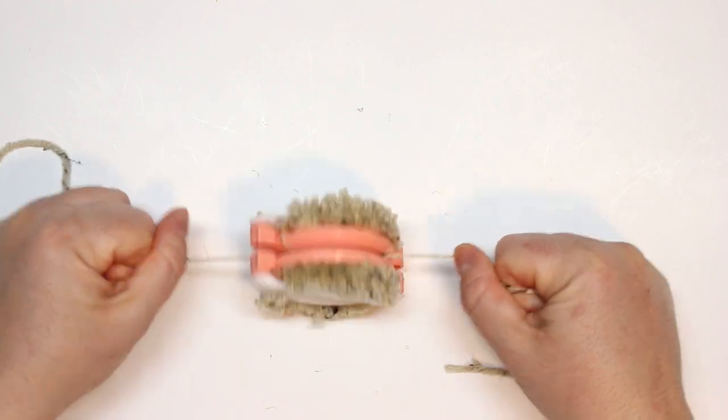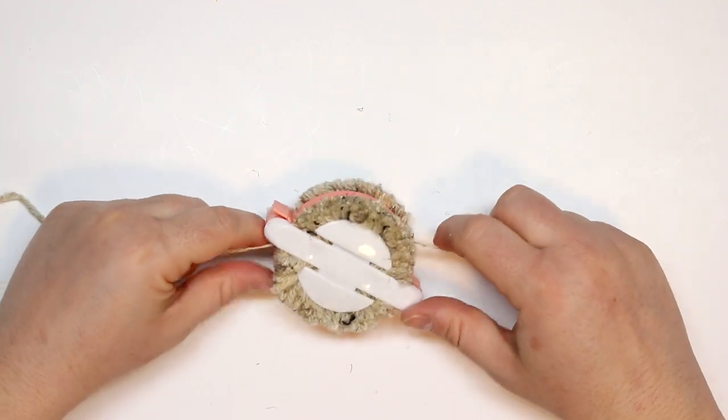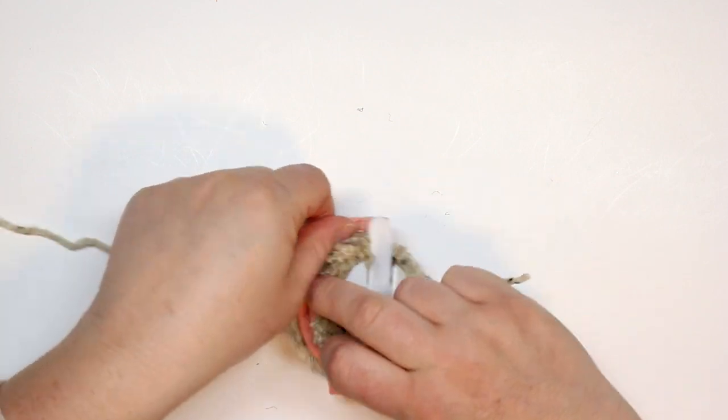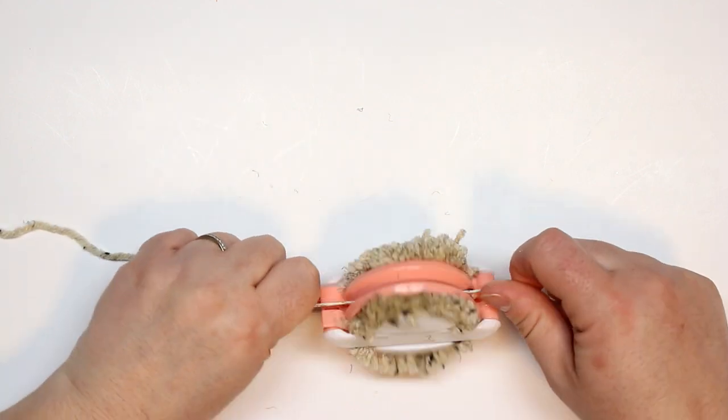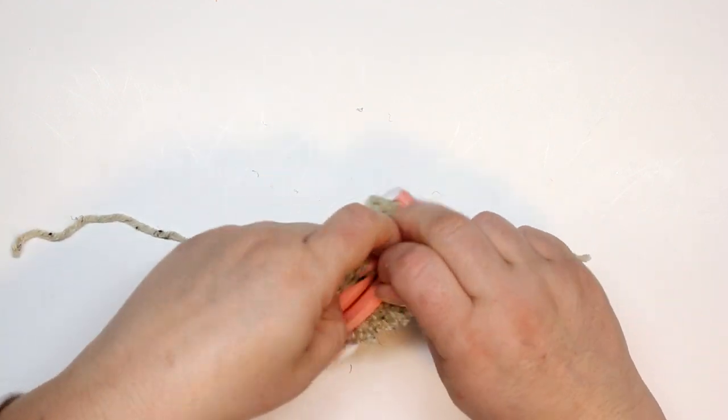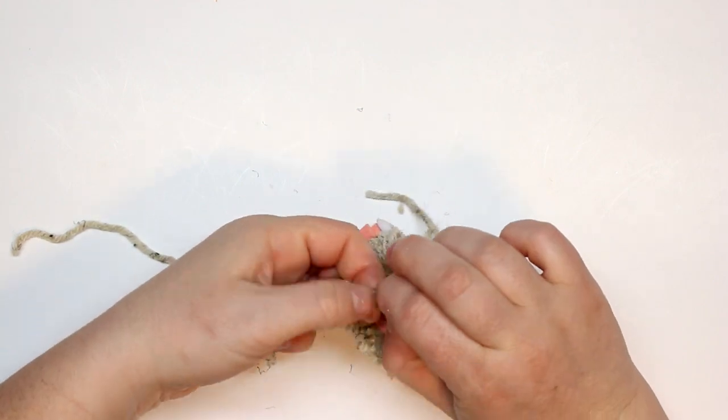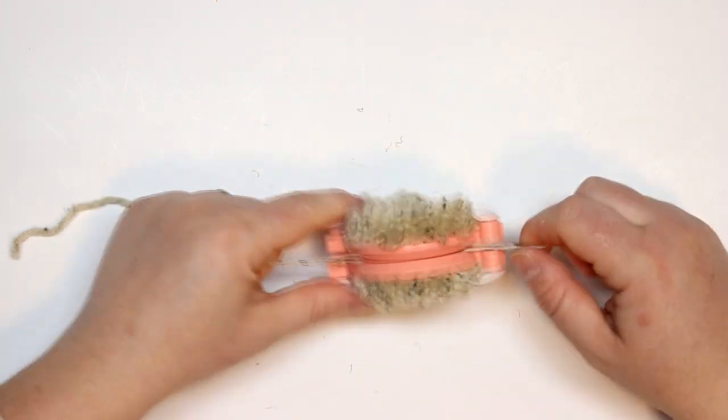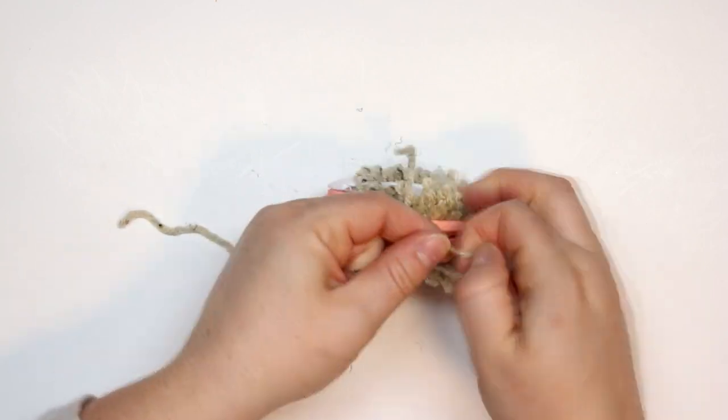Now you're just gonna take another piece of yarn, a longer piece, and then you go into the crack there and just kind of wind it around and do a knot. Then wind it around a couple more times and do another knot. Depending on the yarn you're using you might want to use a stronger yarn.